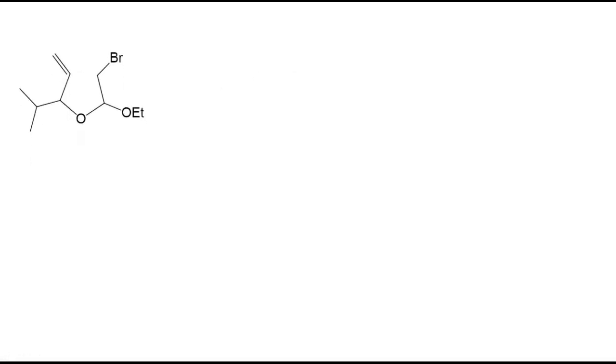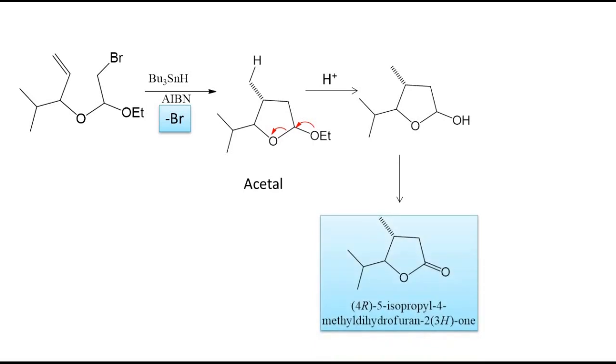Let us take another reactant. Now, what will be the product? This on removing bromine, a cyclization occurs and this forms an acetal. This acetal again reacts with H+ to give the product: 5-isopropyl-14-methyldihydrofuran-21. This will be the product.